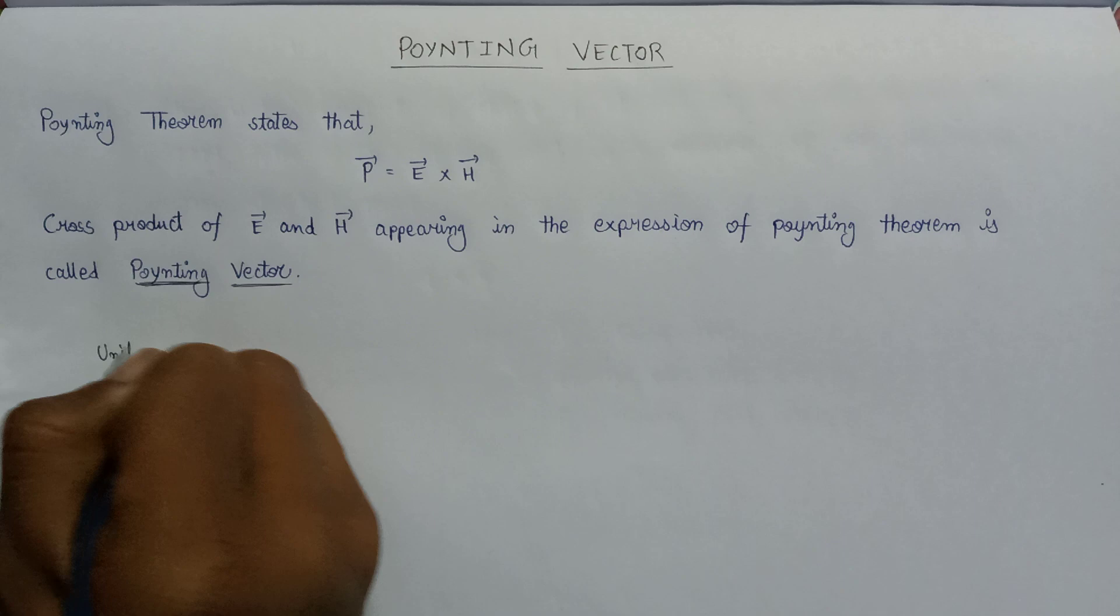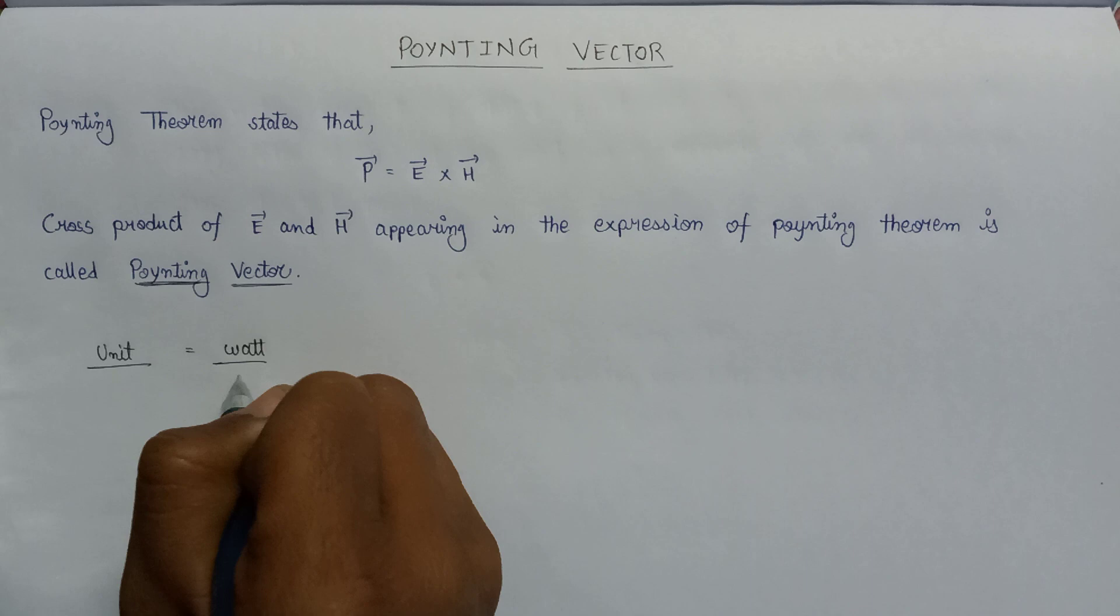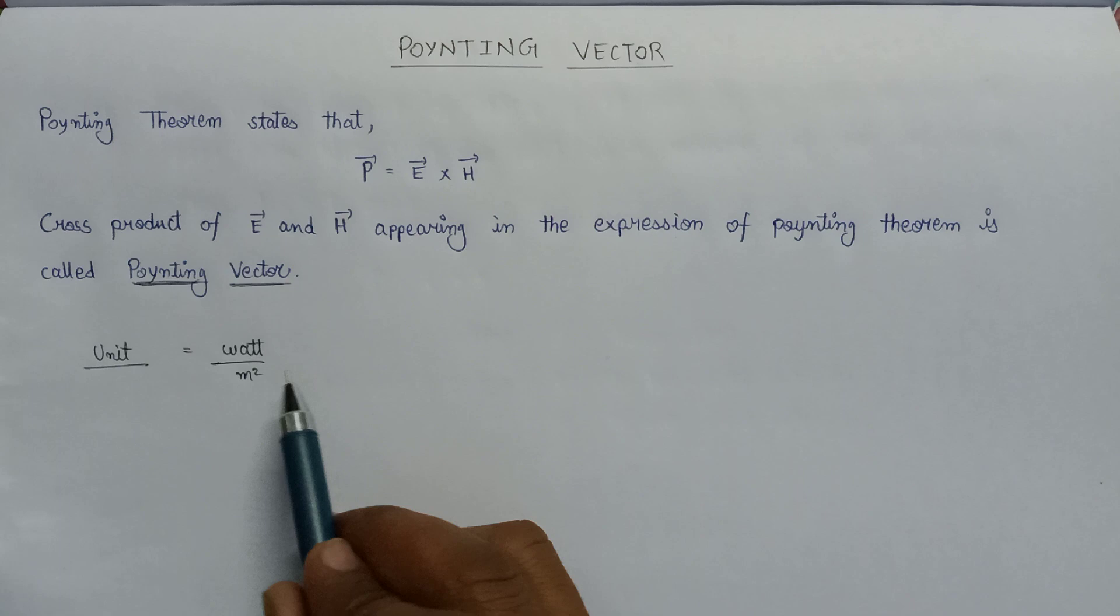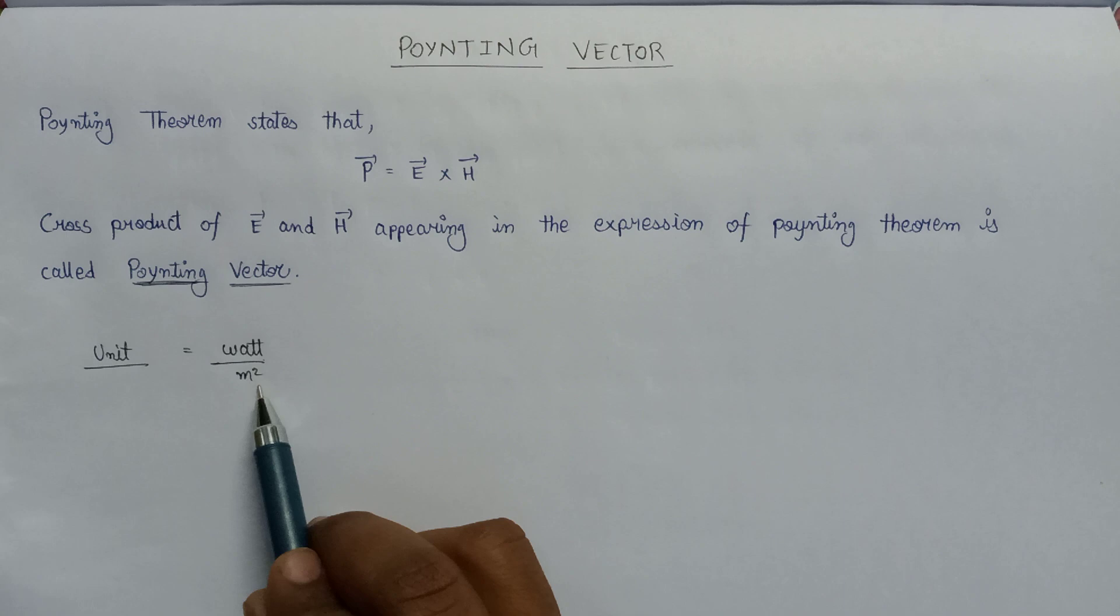That's why its unit is watt per meter square, because it is defined as a power per unit area. Therefore the unit of the power is watt and the unit of area is being represented as meter square.